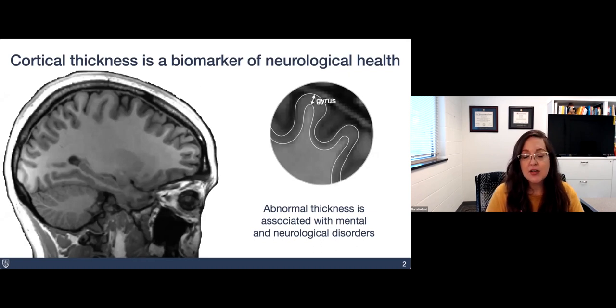Cortical thickness has a characteristic pattern in folded brains, where it tends to be thicker in the outer gyral mountain peaks of the brain and thinner in the inner sulcal valleys. This is a characteristic pattern that's been known for a long time that's seen across both between individuals and within individuals.